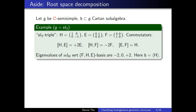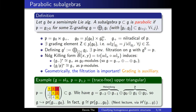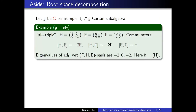A little aside on root space decomposition, mainly to fix notation. Let's work in a complex semi-simple setting with H a Cartan sub-algebra — maximal abelian, self-normalizing. The first example is always SL2: here are the standard commutator relations in terms of an SL2 triple, and the Cartan sub-algebra is spanned by H itself — just diagonal matrices. Instead of talking about eigenvalues for H, we focus on diagonalizable elements in the Cartan sub-algebra and speak of roots.